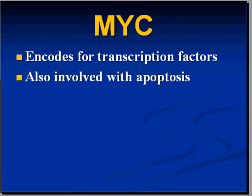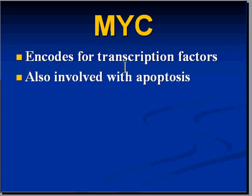Also remember, this is one of the three big and very widely studied oncogenes. Besides the fact that it encodes for transcription factors, it is also involved with apoptosis as well. If you have a gene which is going to interfere with apoptosis because it's mutated into an oncogene, and apoptosis then doesn't occur, that could very easily be a setting for carcinoma — and that's exactly what happens.